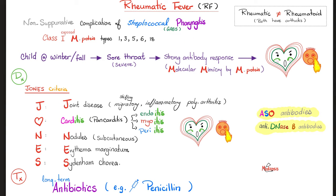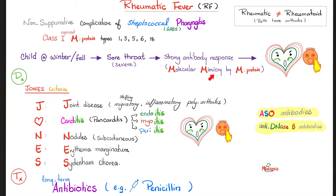Molecular mimicry is caused by the M protein. Your immune system was trying to attack the bacteria but ended up attacking your own heart because the two particles looked similar. We also talked about post-streptococcal glomerulonephritis. After a throat infection, give it one to three weeks and there may be blood in the urine. After scarlet fever or pyoderma, you can also get kidney disease.